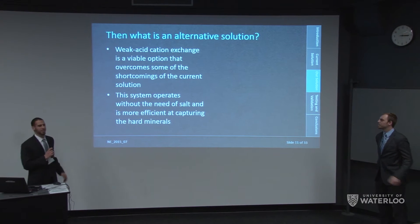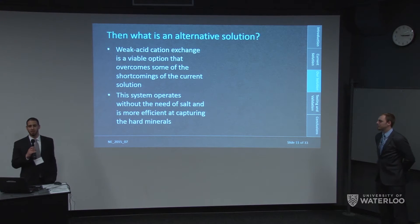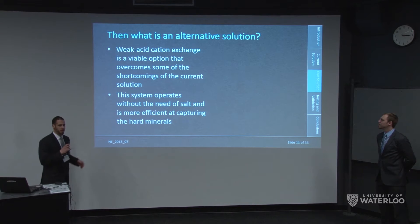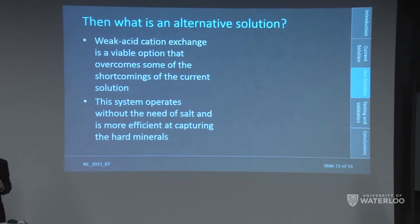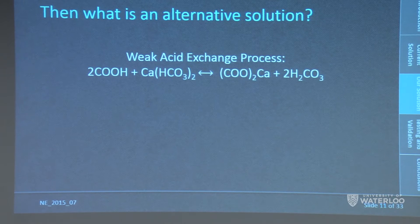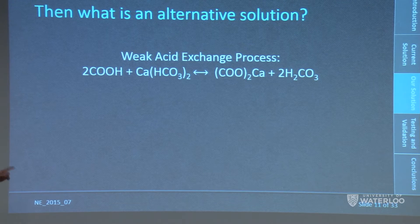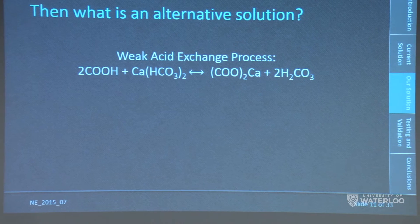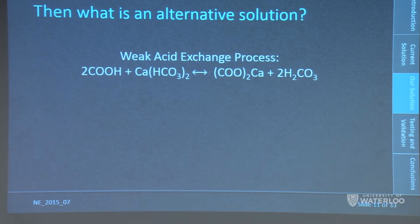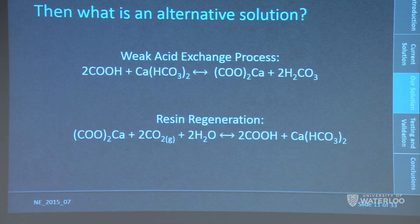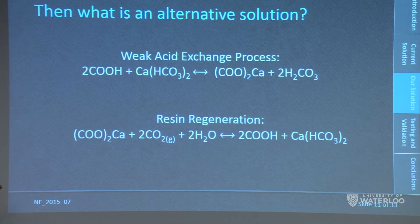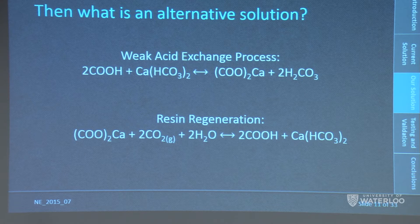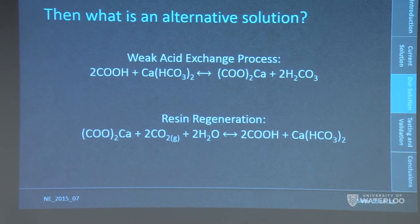The alternative solution is called weak acid cation exchange. In this system, you eliminate the need for sodium and instead use carboxylic acid groups. These groups undergo exchange with calcium — the calcium is captured within the carboxylic acid groups and carbonic acid is released. Carbonic acid is not dangerous; it is unstable and breaks down into carbon dioxide and water. Once the resin reaches capacity, you simply expose the system to carbon dioxide gas, which regenerates the carboxylic acid groups and releases all captured calcium.